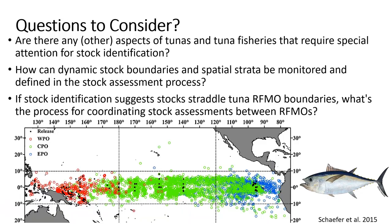Mark and Simon had asked for any questions we should consider for the workshop discussion, so I posed these: Are there any other aspects of tuna and tuna fisheries that should require special attention for stock ID? How can dynamic stock boundaries and spatial strata be monitored and defined routinely in the stock assessment process? And finally, if stock ID suggests that stocks straddle tuna regional fishery management organization boundaries, is there a process for coordinating stock assessments between those regional organizations? With that, thanks again for the invitation, and I'll look forward to the discussion.